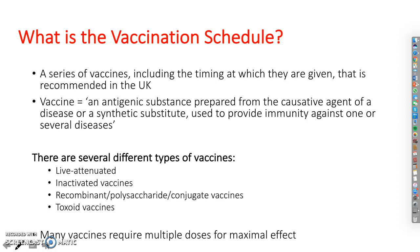Inactivated vaccines are not able to cause infection. Recombinant vaccines are produced using recombinant DNA technology — DNA encoding an antigen is inserted into a human or mammalian cell, which then expresses the antigen that is subsequently purified. Toxoid vaccines use bacterial exotoxins that have been inactivated. As you will see later on, many vaccines are given multiple times to give the maximal effect.